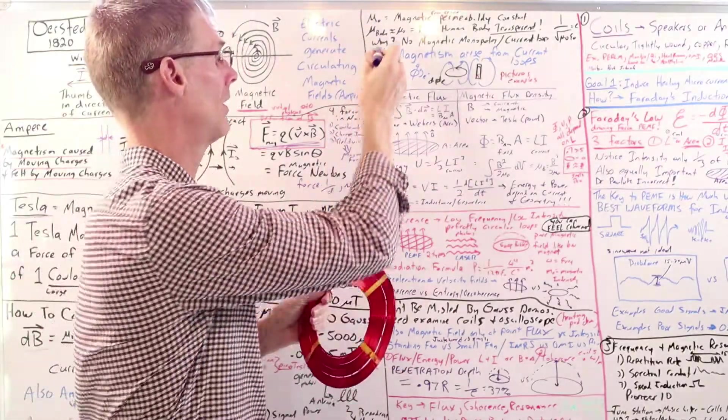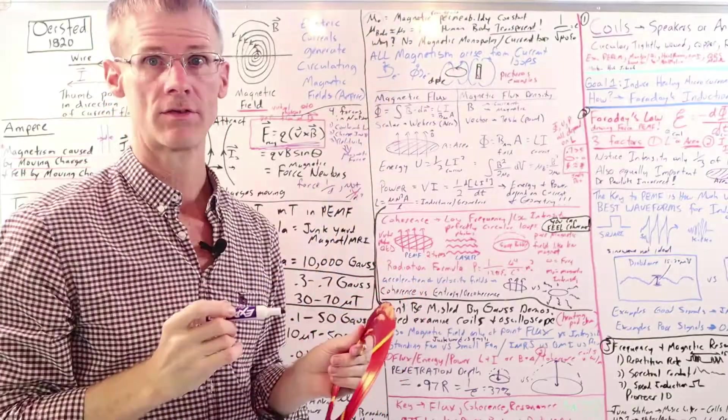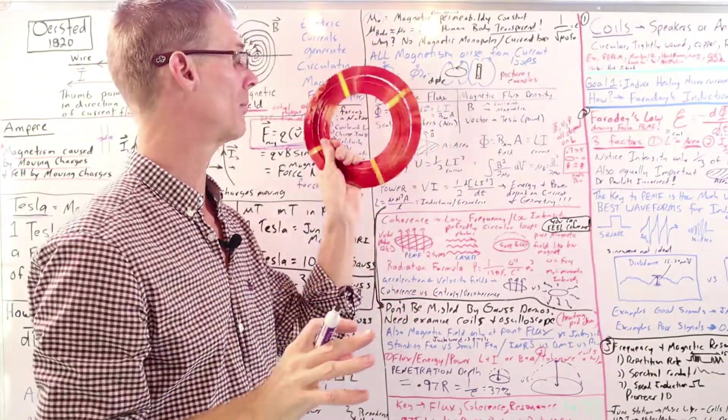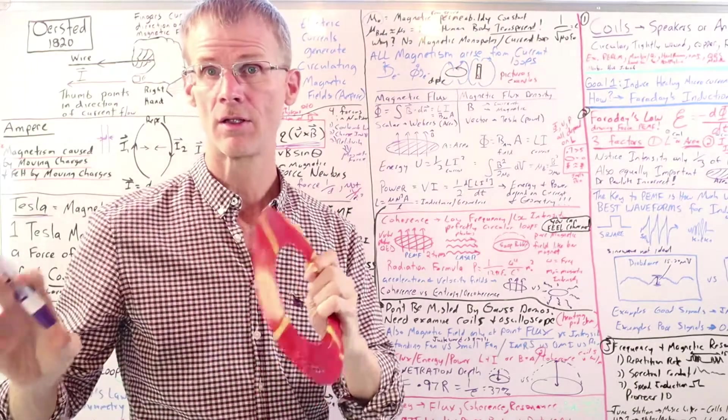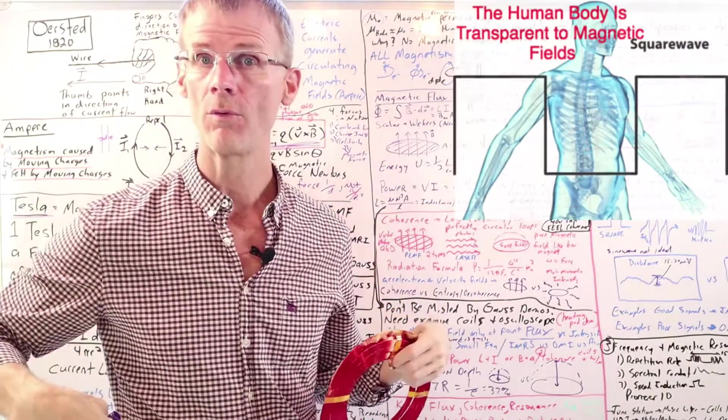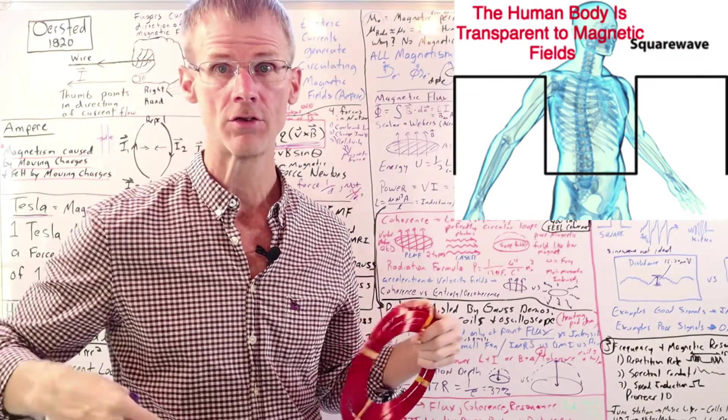So from the Biot-Savart law, there's this little constant called the magnetic permeability constant. And it turns out this is really important because magnetic fields, unlike electric fields, electric currents, and lasers, and light therapy, magnetic fields go all the way through. Your body is transparent to a magnetic field.